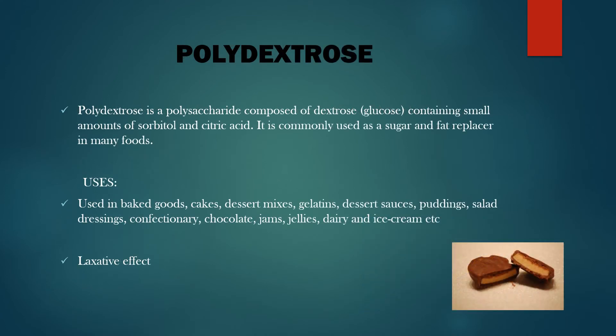The second one is polydextrose. Polydextrose is a polysaccharide composed of dextrose (glucose) containing small amounts of sorbitol and citric acid. It is generally used as a sugar and fat replacer in many food products. Its uses include baked goods, cakes, dessert mixes, gelatin desserts, sauces, puddings, salad dressings, confectionery, chocolate, jam, cherries, dairy, and ice cream. It can have laxative effects.